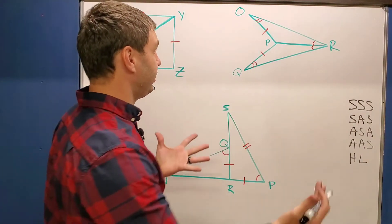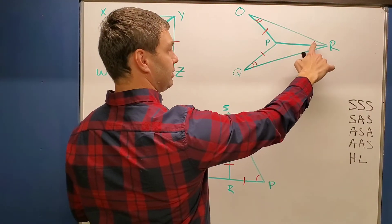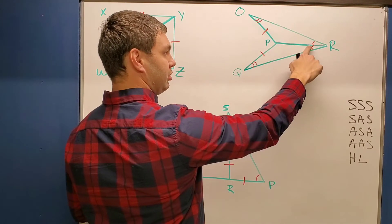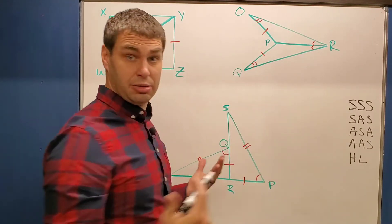What about the next one? What do they give us here for the information? It looks like I have an angle, angle, and a side in the top one and down below the same thing. Angle, angle, side. Is that one of my choices?